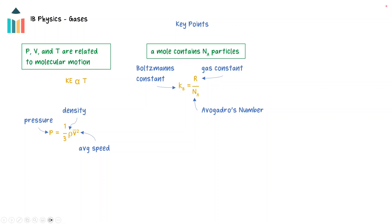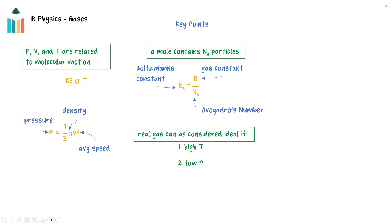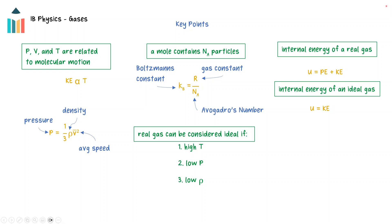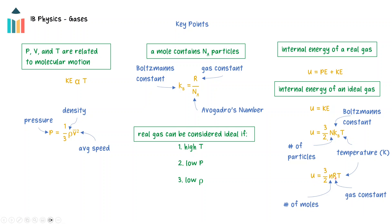An ideal gas is a gas with uniform particle size in which the collisions between the particles and the container are elastic. Real gases can be considered ideal under high temperature, low pressure, and low density. The internal energy of a gas is the sum of the potential and kinetic energy of the particles. For an ideal gas, the potential energy of the particles is negligible, so the internal energy is the kinetic energy of the molecules. This is expressed as: internal energy equals three-halves times the number of particles times Boltzmann's constant times the temperature in Kelvin, or equivalently three-halves times the number of moles times the gas constant times the temperature in Kelvin.